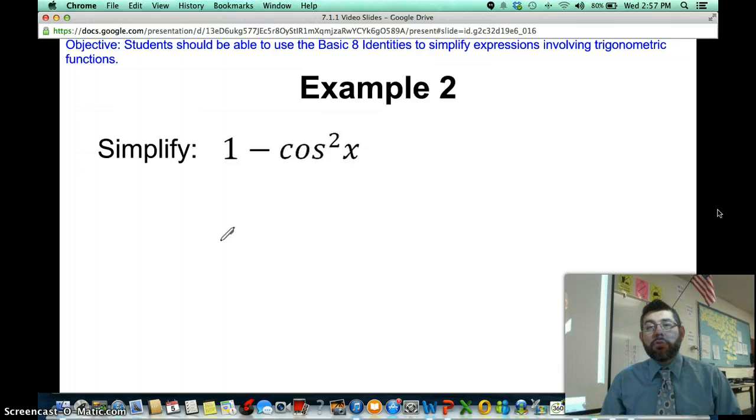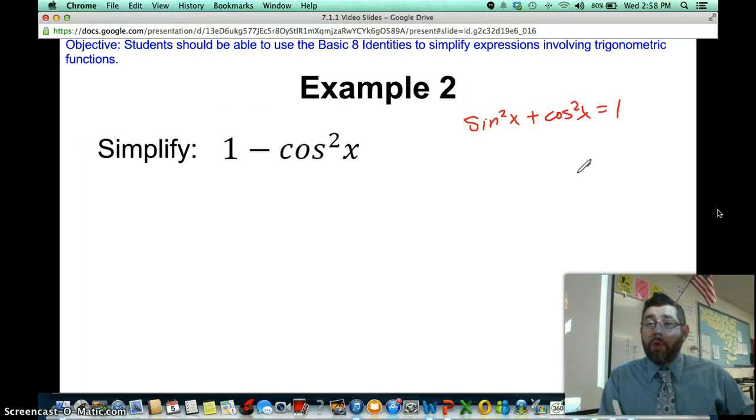One minus cosine squared x. Remember our number one, this is the most important one. Sine squared x plus cosine squared x, or cosine squared plus sine squared, is equal to one. It's the basic Pythagorean identity.